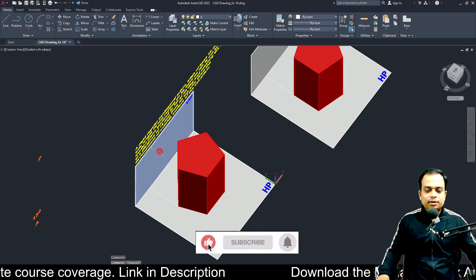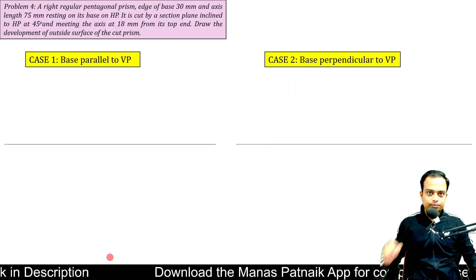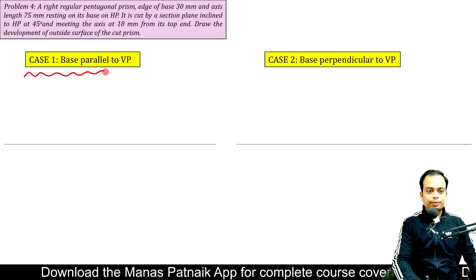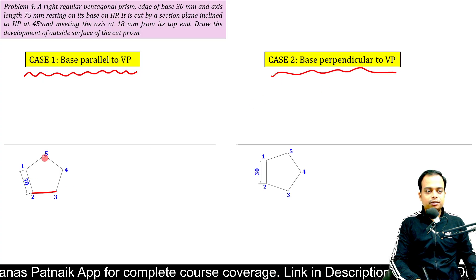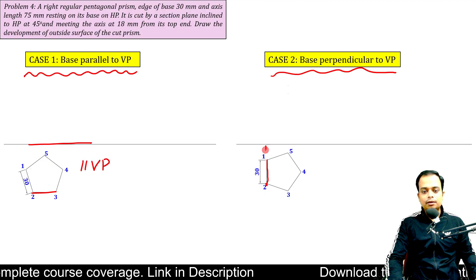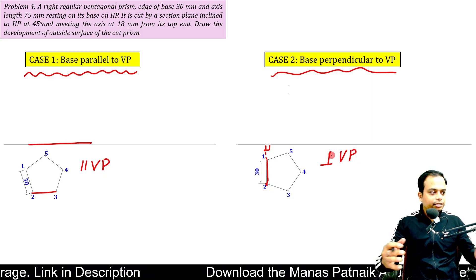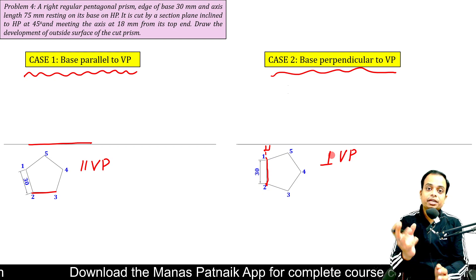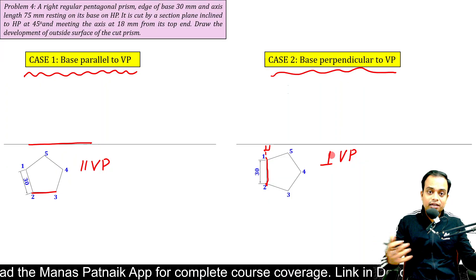Now, let me straight away move to the presentation. Two cases. As I just discussed, base parallel to VP. Here it is. Base perpendicular to VP. Here, the base is parallel to VP. And here, the base is perpendicular to VP. I just want all of you to appreciate the fact how the development of a solid changes if you change the orientation. And I'm going to be running the animation simultaneously. So that you can have the best perspective on this.